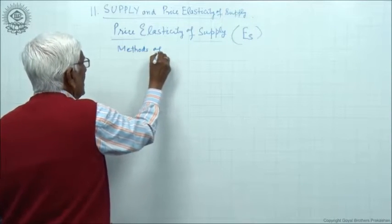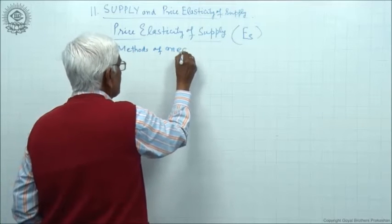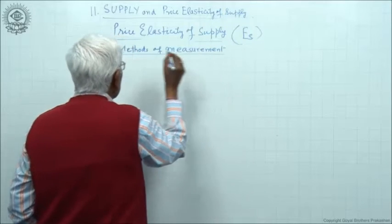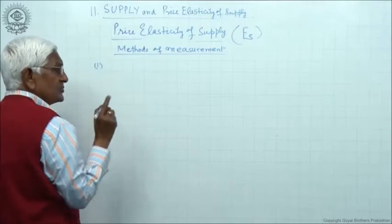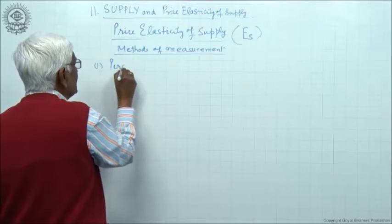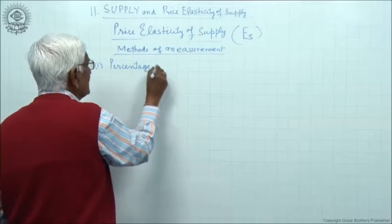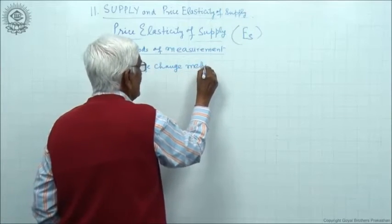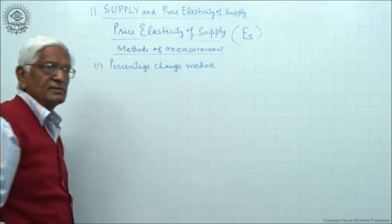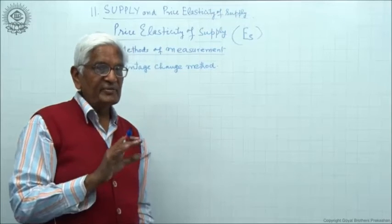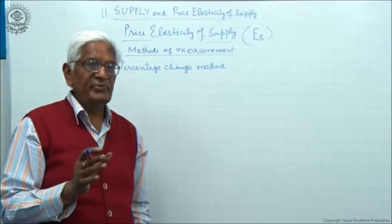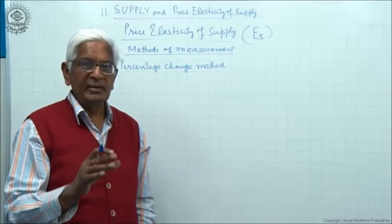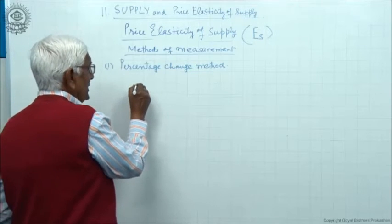We will study two methods of measuring price elasticity of supply. The first method is the same as in case of demand, which we call the percentage change method. In case of demand, we have already derived that method, so we need not derive it again. It is derived in the same manner; you can read it from there. The method remains the same.